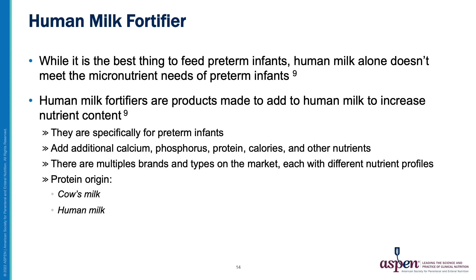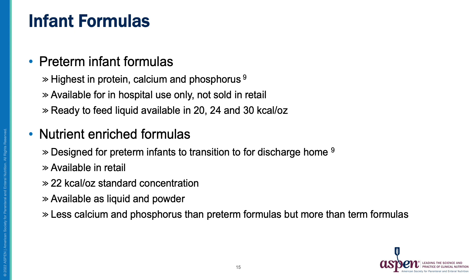While human milk is the best thing to feed preterm infants, human milk alone does not meet their micronutrient needs. Human milk fortifiers are products added to human milk to increase the nutrient content, specifically designed for use in preterm infants. They add calcium, phosphorus, protein, calories, and other nutrients. There are multiple brands and types on the market, each with a very different nutrient profile. There are two types of protein origins currently available: cow's milk or human milk.